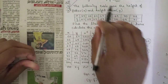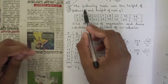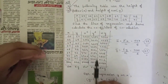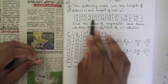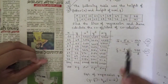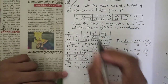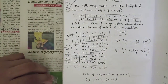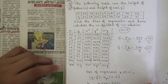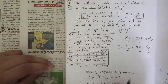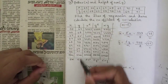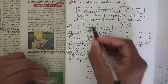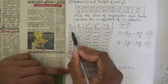The next question gives the height of father (x) and height of son (y) for 8 observations, so n = 8. To find the regression lines, we need the parameters: summation x, summation y, summation x², summation y², and summation xy. Substituting the values: summation x = 544, summation y = 552.